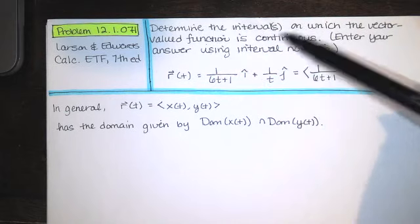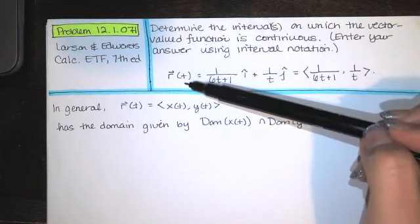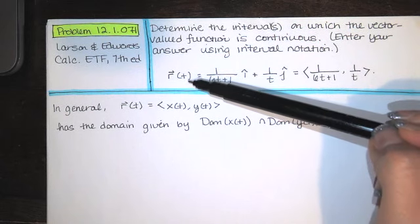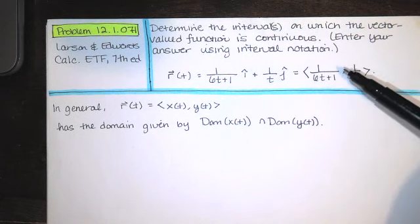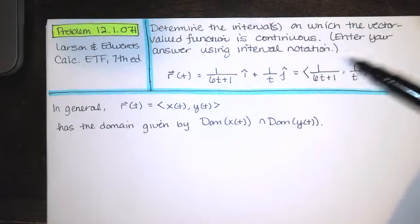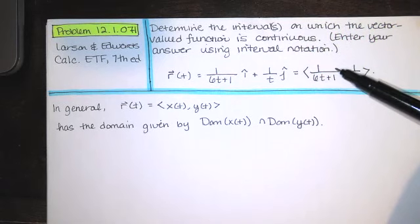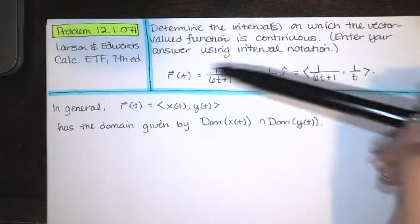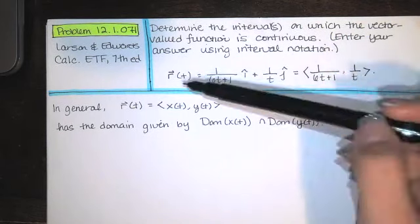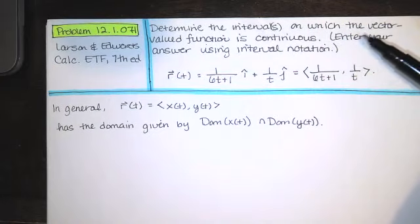This question asks us to determine where the function is continuous. It turns out that r(t) will be continuous on its domain, because the functions we have for our x component and y component are rational functions. In Calculus 1 we discussed that rational functions are continuous on their domain. Since x(t) and y(t) are each continuous on their domains, r(t) will be continuous on its domain, which is determined by the domains of x(t) and y(t). So even though they're not asking us to find the domain of r(t), in order to find the intervals of continuity we really have to find that domain.